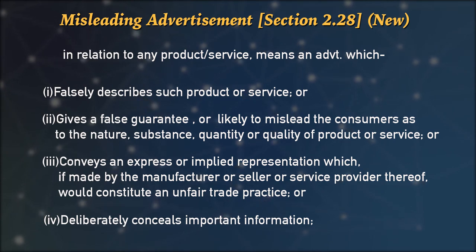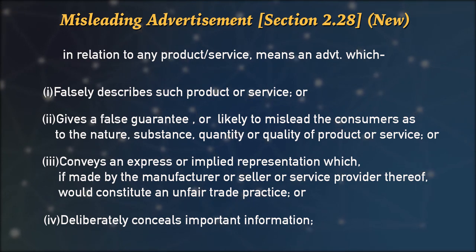Misleading advertisement also occurs when important information is deliberately concealed. For example, an advertisement claiming that two glasses of one oil is equivalent to one glass of a competitor's product — this was challenged before the court of law and found to be a misleading advertisement. You can promote your own product, but you have no right to degrade the commodity of your competitors. Therefore, you cannot make such an untrue comparison. This type of advertisement is referred to as misleading advertisement.